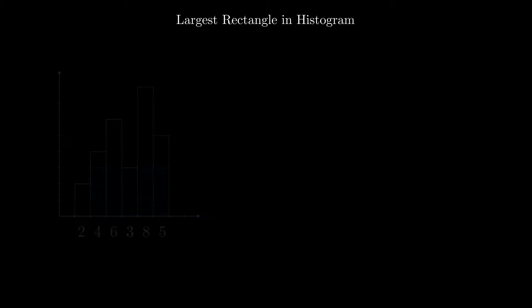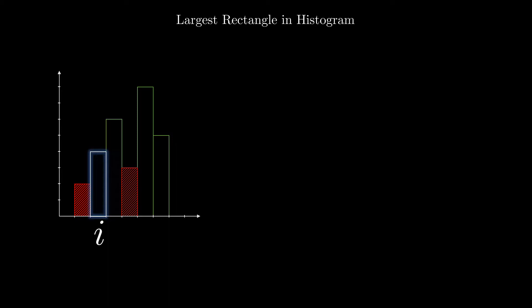To achieve this, let us consider the bar at position i. If we can find the first bar smaller than it towards the left and towards the right, the rectangle formed between the left and right bars with the height equal to ith bar will be the largest rectangle which includes the ith bar completely.